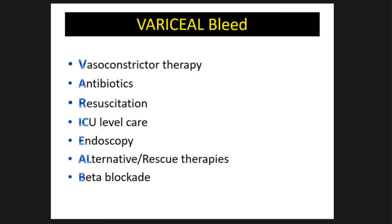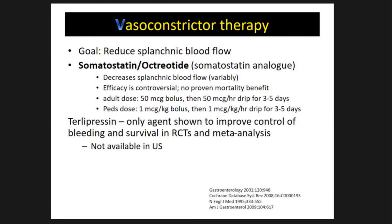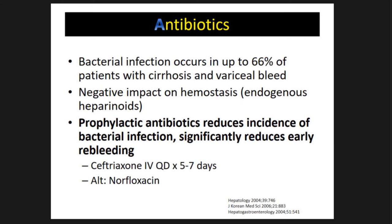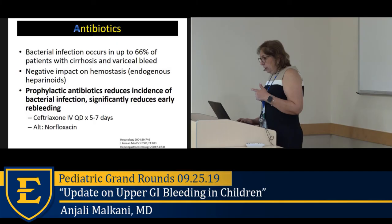Variceal bleed treatment uses the mnemonic VARICEAL: Vasoconstrictor therapy (octreotide — decreases splanchnic blood flow; give bolus then continuous infusion), Antibiotics (ceftriaxone — indicated in liver disease with ascites since bacterial infection occurs in ~60% of cirrhotics with variceal bleeding and has a negative impact on hemostasis due to endogenous heparanoids), Resuscitation (be restrictive with transfusion — over-resuscitation increases portal pressure and worsens bleeding; keep hemodynamically stable without precipitating more bleeding), ICU care, Endoscopy (as soon as possible after resuscitation, usually within 24 hours; intubation is typically required).